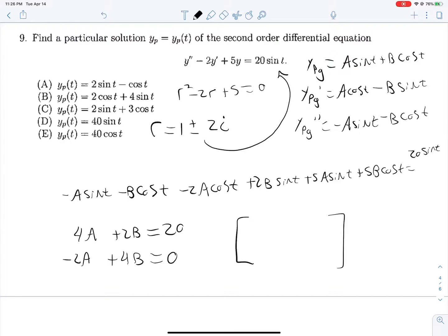We can put this into a matrix, a little augmented matrix: 4, 2, 20; negative 2, 4, 0. Dividing our top row by 2, we get 2, 1, 10. Adding it to row 2, we get 0, 5, 10, which we can simplify down to 0, 1, 2, subtract it here, and divide.